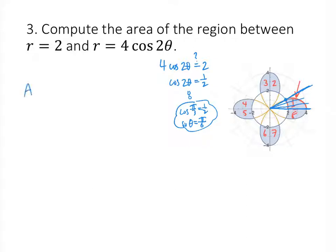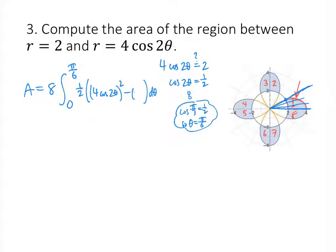So the area is 8 times the integral from 0 to pi over 6 — multiplying by 8 using symmetry. The formula is 1/2 times the difference of the squares of the two functions. The four-leaf clover is the outer curve and the circle is the inner curve, so that's 4 cosine 2 theta squared minus 2 squared.